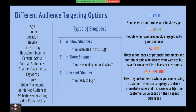Here are all the different targeting options available in Google Ads: age, gender, location, device, time of day, household income, parental status, similar audiences, channel placements, keywords, topics, video placements, in-market audiences, website remarketing, and video remarketing. The list is long and should make you feel like, 'Wow, why am I not doing Google Ads?' Your customers are all on Google. People go to Google to search and solve their problems, so if your business offers a solution or value, you can build targeting around that — demographics, psychographics, and different types of shoppers like window shoppers, in-store shoppers, or checkout shoppers.